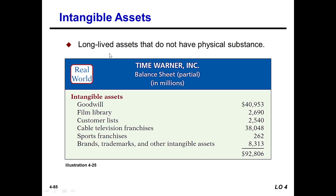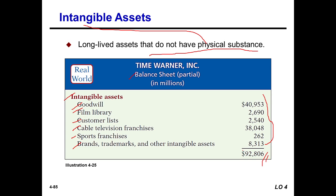Intangible assets are long-lived assets that do not have physical substance. Examples include goodwill, film libraries, customer lists, cable television franchises, sports franchises, brands, trademarks, and other intangible assets. These assets do not have any physical substance but are long-lived assets.